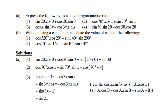Express the following as a single trig ratio — now you must reverse it. A1: sin 2θ cos θ plus cos 2θ sin θ — you should recognize this as the compound rule for sin of the sum of two angles. Therefore it is sin(2θ plus θ), which is sin 3θ. Number 2: cos 70° cos x plus sin 70° sin x — recognize this as the cosine compound rule with a negative in the middle, so cos(70° minus x). Number 3: cos x sin 3x minus cos 3x sin x — recognize this as the sine compound rule, giving sin(3x minus x), which is sin 2x.